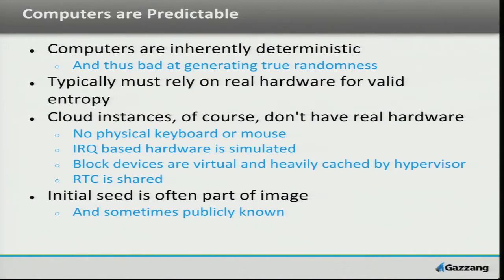Perhaps the biggest problem — and the thing I think would be most essential to address inside of OpenStack — is that the initial seed for these instances is typically part of the cloud image when it's generated. When Ubuntu generates its AMIs, there's an initial seed that's part of that cloud build, and every AMI that starts has that same initial seed. Having something different happen when you launch your instance versus when an attacker launches an instance they're trying to mimic is essential to seeding the initial pseudo-randomness.